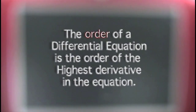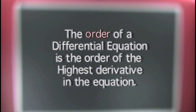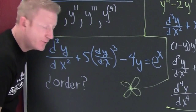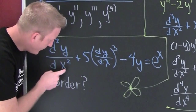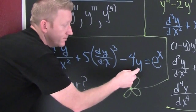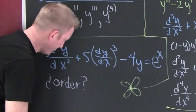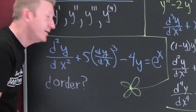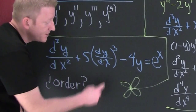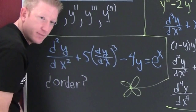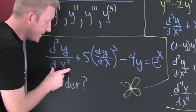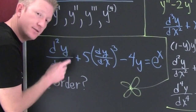The order of a differential equation is the order of the highest derivative in the equation. Here we have the second derivative of y with respect to x, plus five times the first derivative cubed minus four y equals e to the x. What's the order? The order is the highest derivative. This is the second derivative; this is the first derivative cubed. Two is bigger than one, so the order here is two — second order.